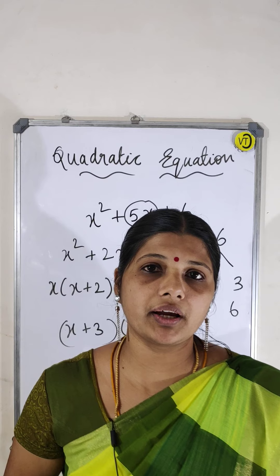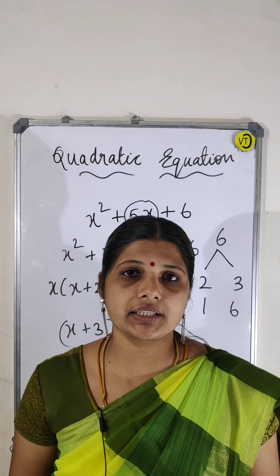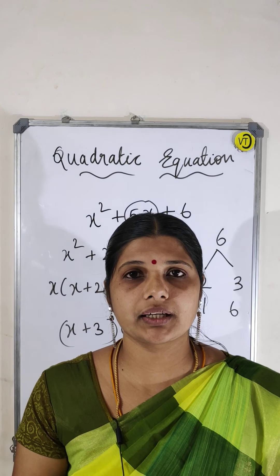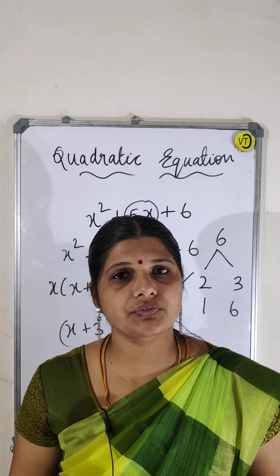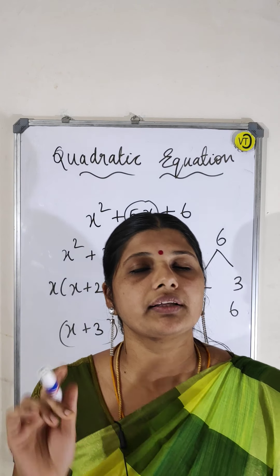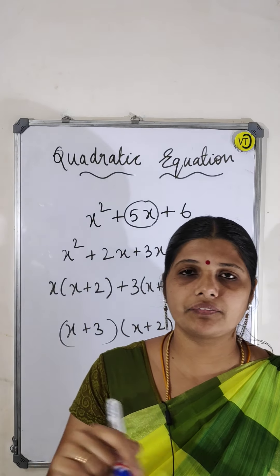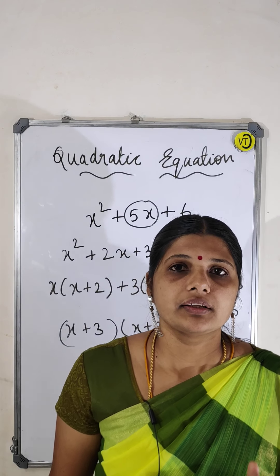One more method is the quadratic formula: x = (−b ± √(b²−4ac)) / 2a. You can also use this formula to find the value of x.